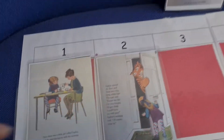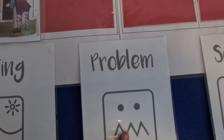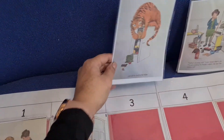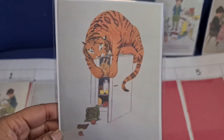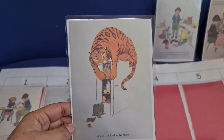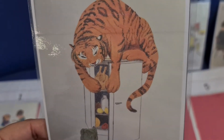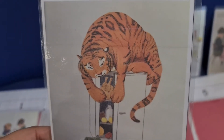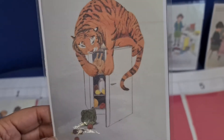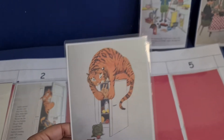Look, there's a problem. What's our problem? There's a tiger that came to tea, and here he is eating all of Sophie's food in her fridge. It's a stripy tiger who's orange and has black stripes and a long tail, and he's on top of her fridge eating all of her food.